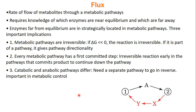This idea of speed or flow we call flux — flux is how fast your metabolites go through a metabolic process. To understand flux for any process, you need to know which enzymes are near equilibrium and which ones are far away. Enzymes far from equilibrium are strategically placed in certain spots in metabolic pathways to control metabolism. This placement has important implications: metabolic pathways are generally irreversible, so the overall metabolic process has a directionality — it doesn't really go backwards.